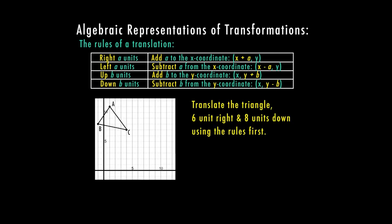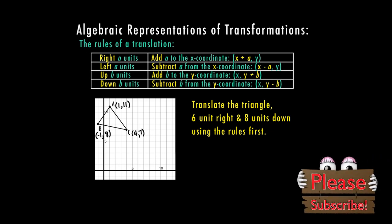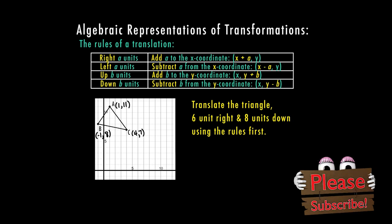Let's go ahead and put these into practice. I have a triangle here and I'm going to label my points on my graph. A is at (1, 11), point B is at (-1, 8), and point C is at (4, 7). I'm going to use that information to translate the triangle.